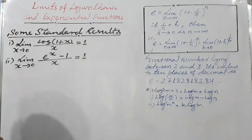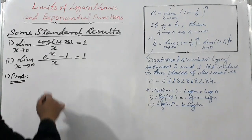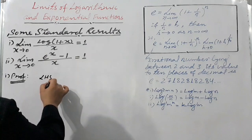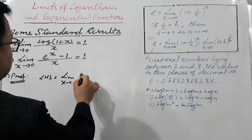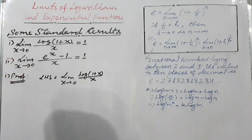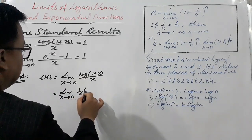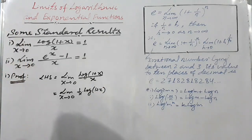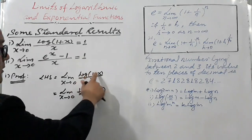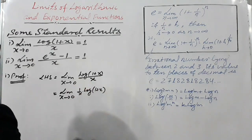Now I'm going to prove the first standard result. Taking the left-hand side: the limit as x tends to 0 of log(1 + x) / x. We can write this as the limit as x tends to 0 of (1/x) times log(1 + x). Either form - log(1 + x) / x or (1/x) times log(1 + x) - both represent the same thing.